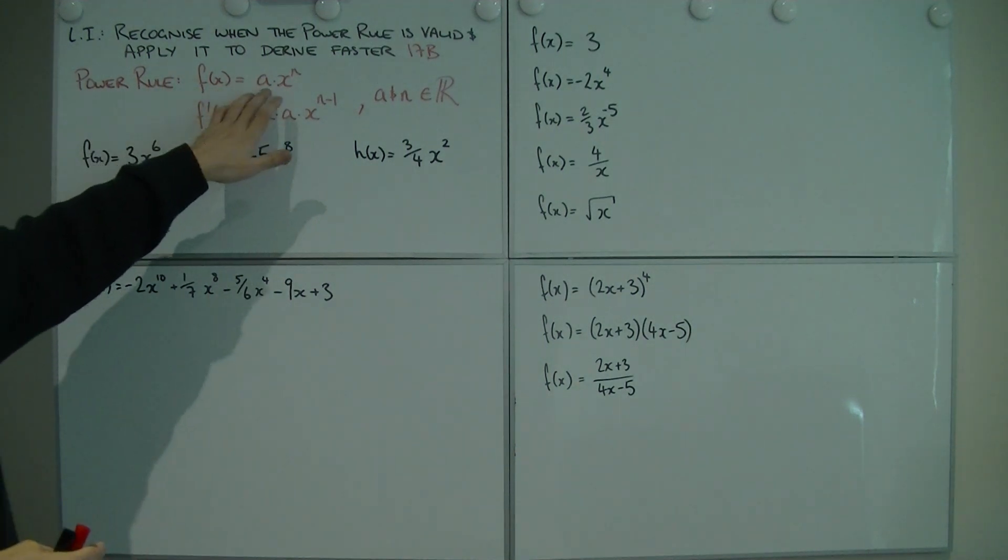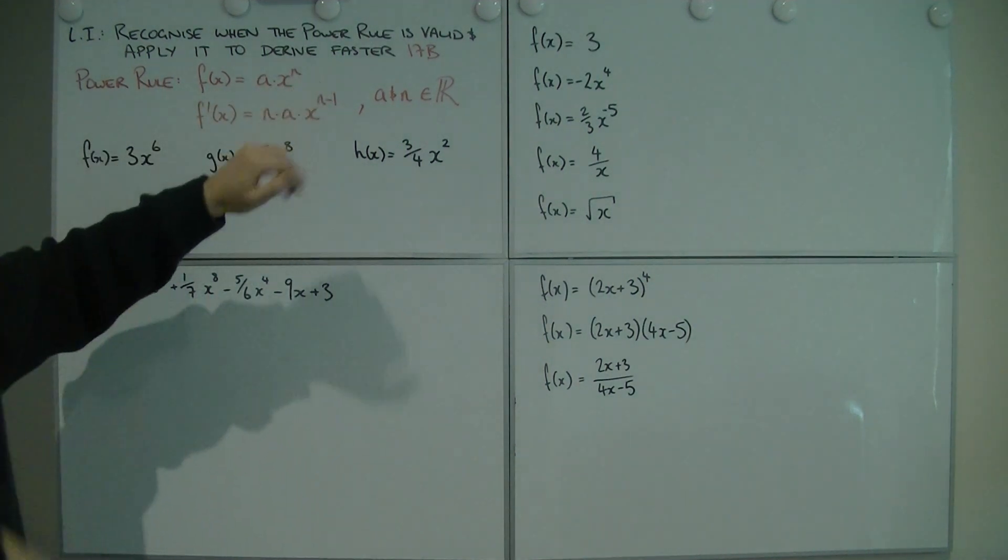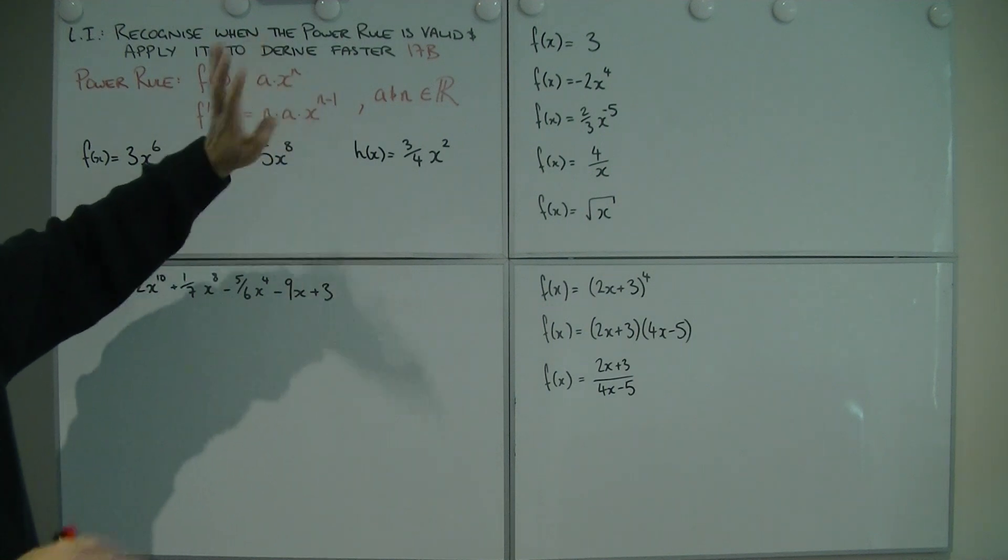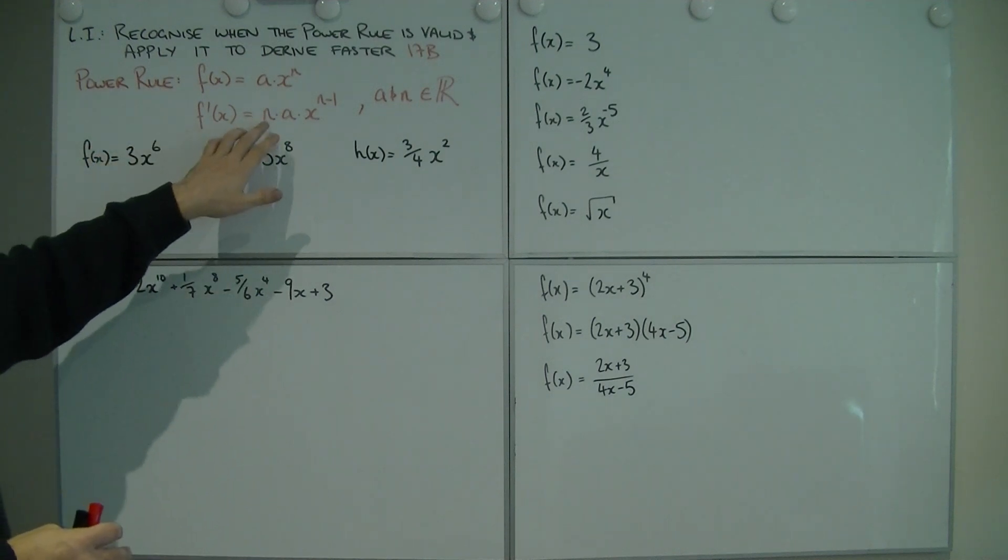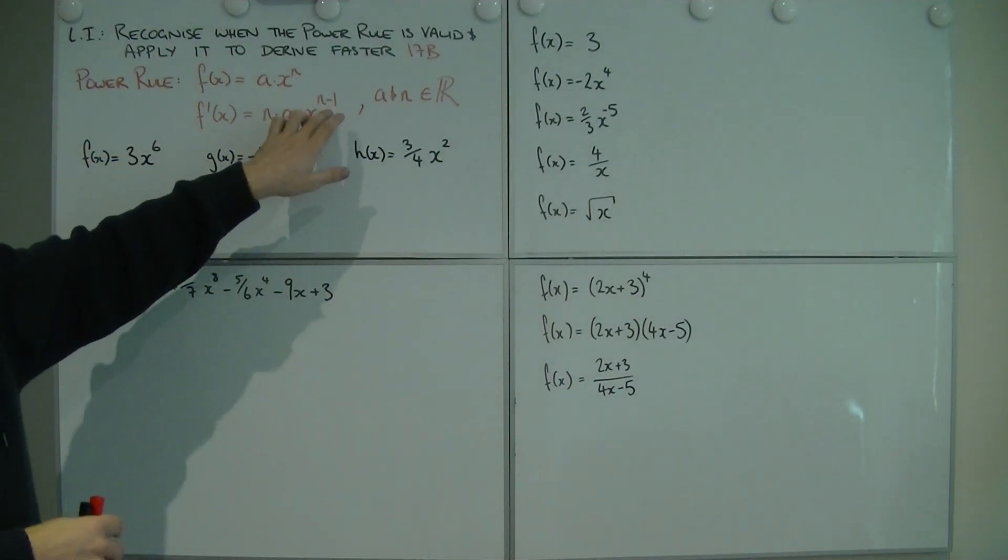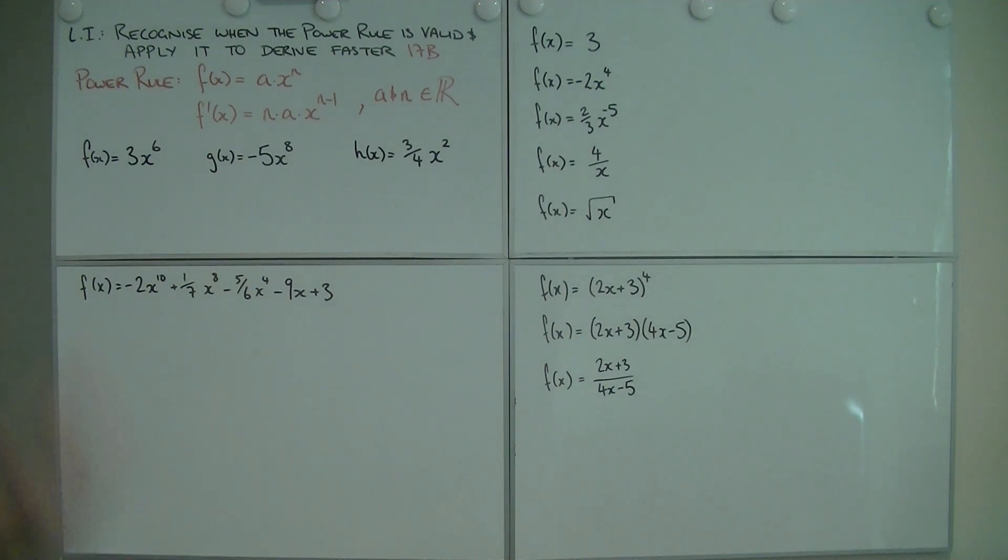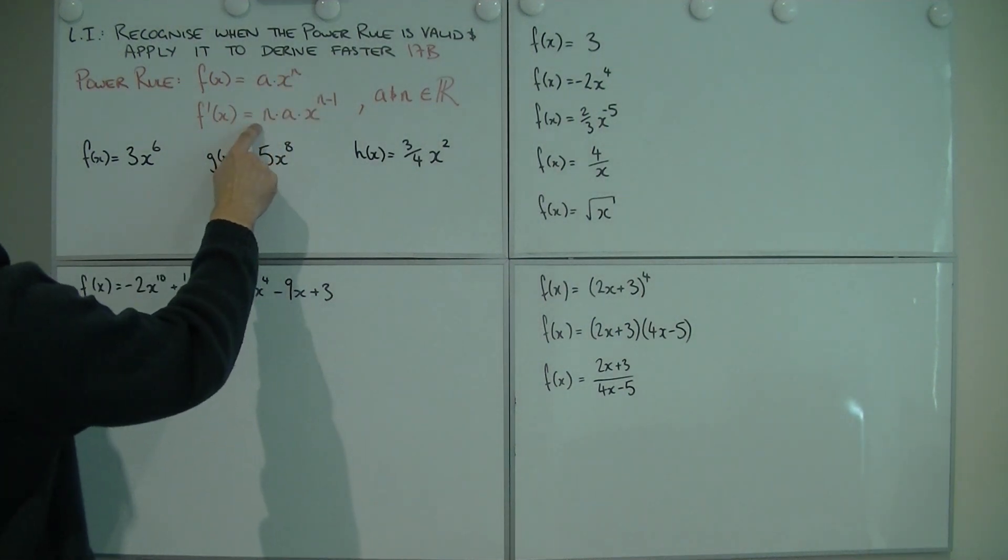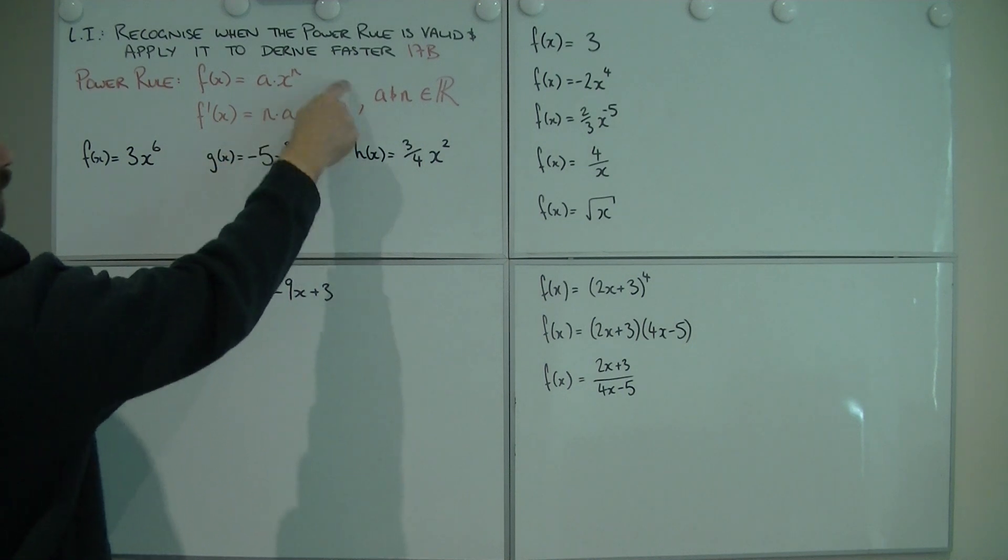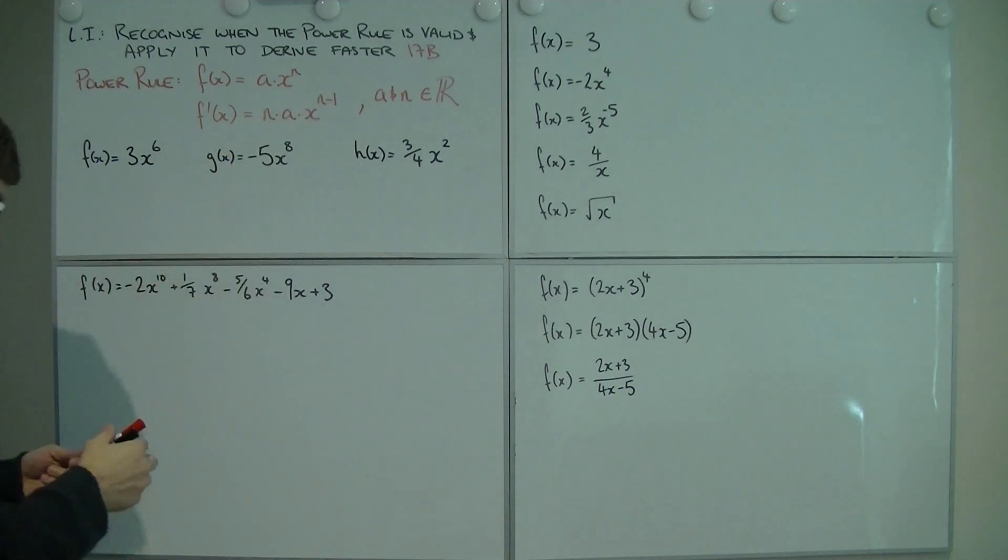If you have some function which is a times x to the power of n, just x to the n, not a to the power of n, when you take the derivative of that, you're going to end up with n times a times x to the n minus 1. Easiest way most people remember this is you take the power, bring it down the front, and when you do so, the power reduces by 1.